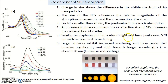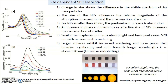Smaller nanospheres primarily absorb light and have peaks near 520 nanometers with a narrow peak. In figure A, gold nanoparticles of size 10, 20, and 30 nanometers are shown, up to 70 nanometers with continuous lines, and 80, 90, and 100 nanometers with dotted spectra. For sizes 10 to 40 nanometers there is not much change in optical density, but from 50 and 60 nanometers it is slightly shifting towards higher wavelength.